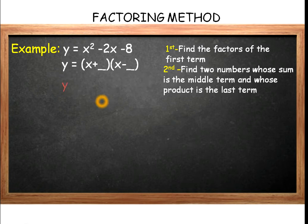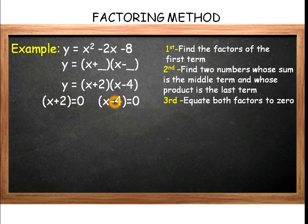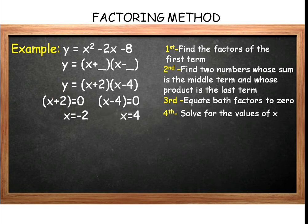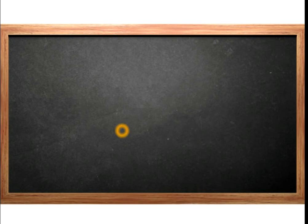The two numbers we are looking for are 2 and negative 4. The third step is to equate both factors to zero: x plus 2 equals 0, and x minus 4 equals 0. Solving for x, we transpose positive 2, giving us negative 2, and transposing negative 4 gives us positive 4. Thus, the zeros of y equals x squared minus 2x minus 8 are negative 2 and positive 4.